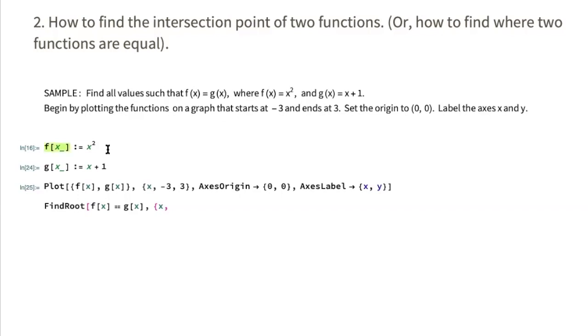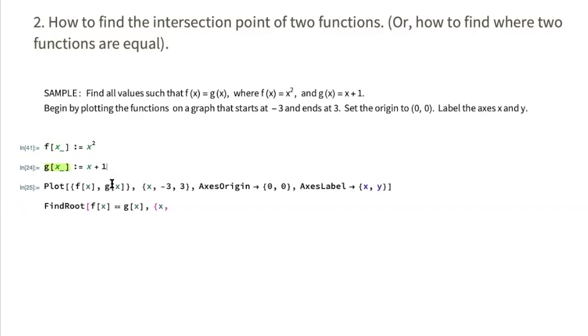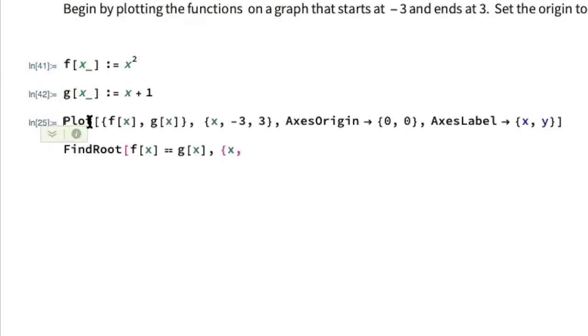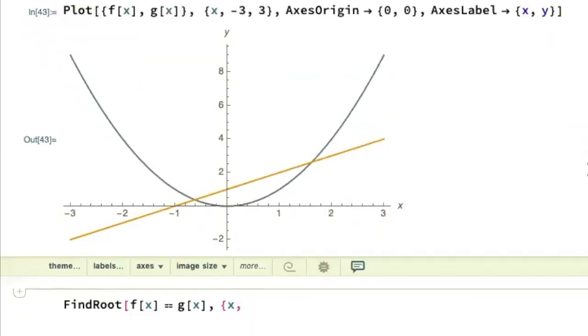I've set up some of the basic commands. You're going to store your function f. You're going to store your function g. We're going to go back to the Plot command to make the graph. When you're graphing more than one function, you need to put them inside of set brackets. The next command specifies the domain, the parts of these functions that I want to see. Then the AxesOrigin command is going to have my axes intersect at zero zero. AxesLabel tells it to label the axes x and y.